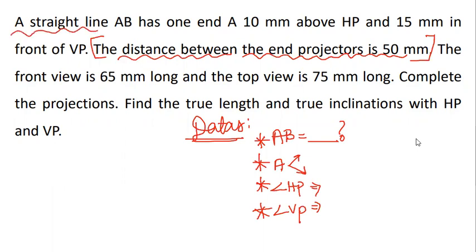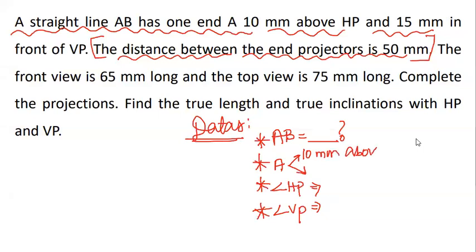A straight line AB has end A, 10mm above HP, 15mm in front of VP. The front view is 65mm long and the top view is 75mm long. In this problem, there is a true length and true inclination angle.